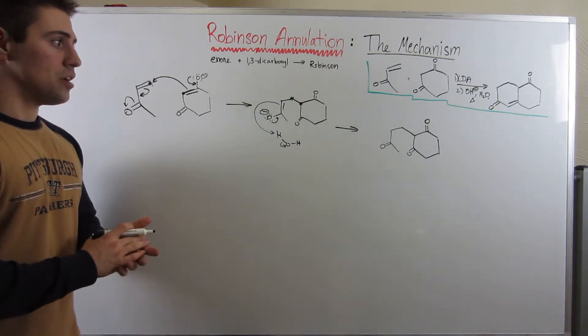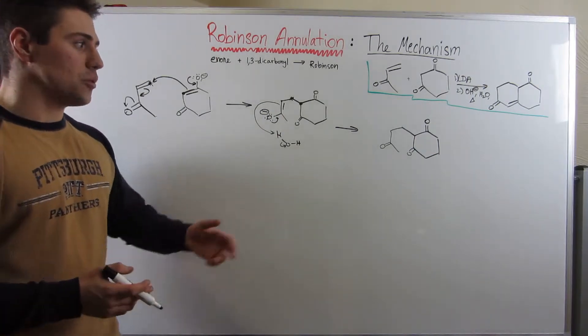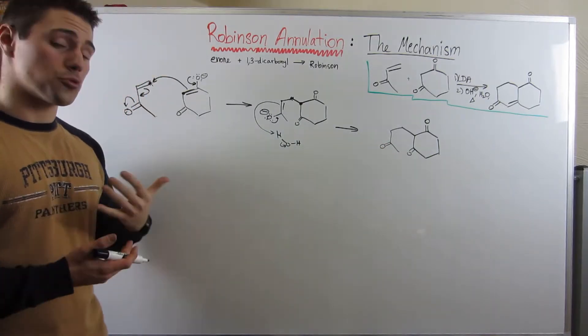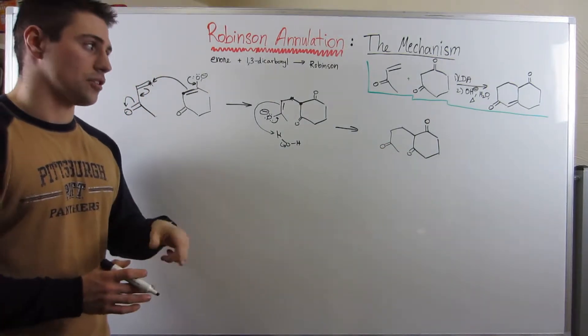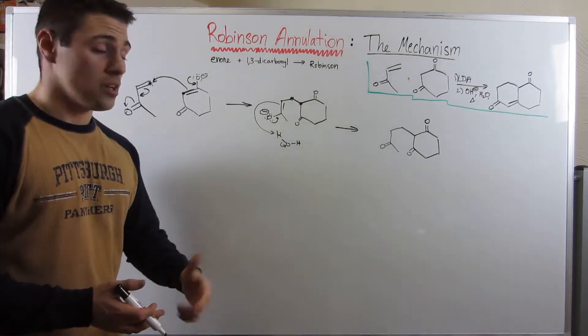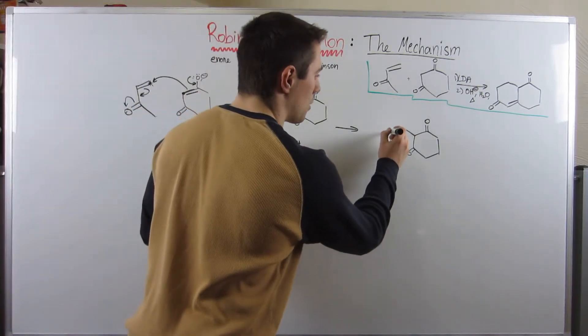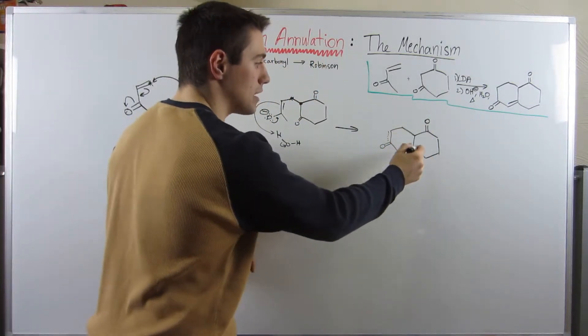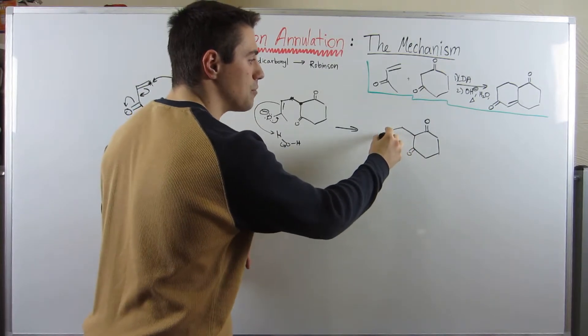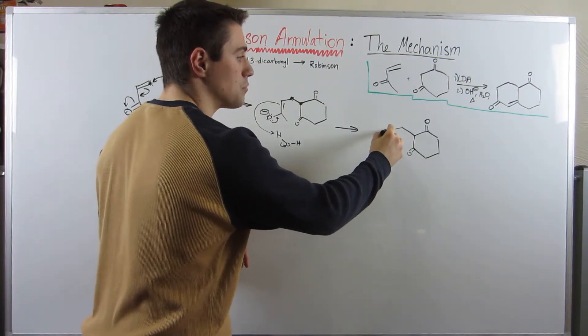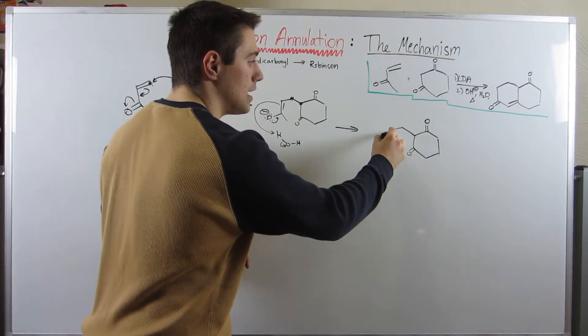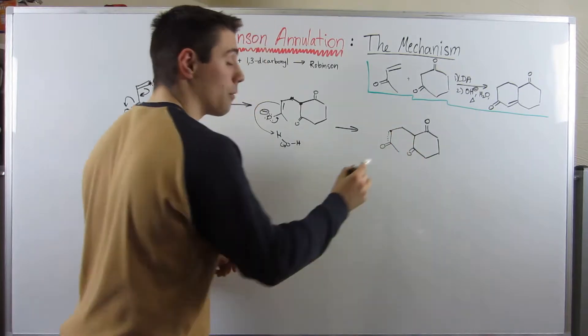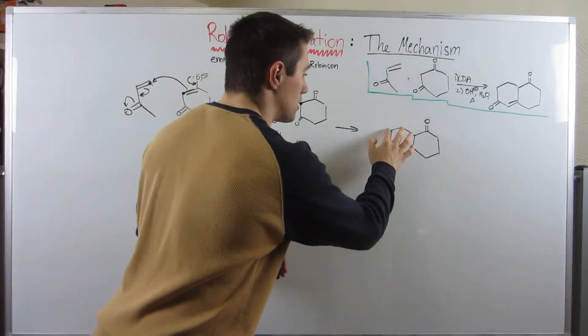Now we're going to do an aldol reaction. We're actually going to make an enolate out of this carbonyl right here. The question is, which one are we going to form? Here's the answer: we don't really get to choose. We can either make our enolate this way, in which case we're going to attack one of these two carbonyls. If we're going to attack from this carbonyl, we have the choice. It would be a one, two, three, four membered ring. Not great because we know there's a lot of ring strain associated with that.